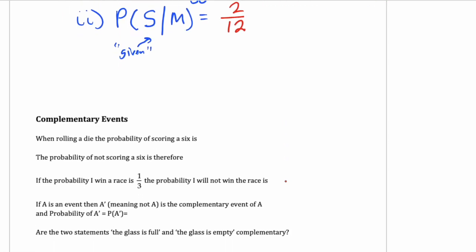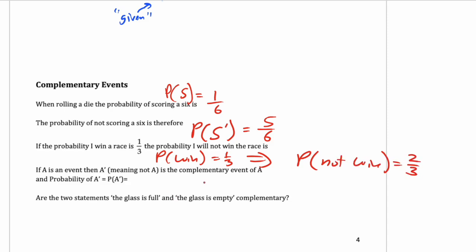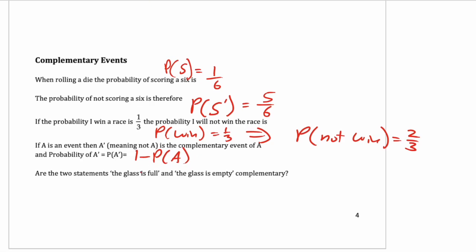Now let's look at complementary events. Rolling a die, the probability of scoring a 6 is 1/6. The probability of not scoring a 6 is 5/6, and those probabilities must add up to 1. For example, the probability of winning a race equals 1/3, so the probability of not winning equals 2/3 — they add up to 1 because they're complementary events. So P(not A) = 1 − P(A). That's a formula in our formula booklet.